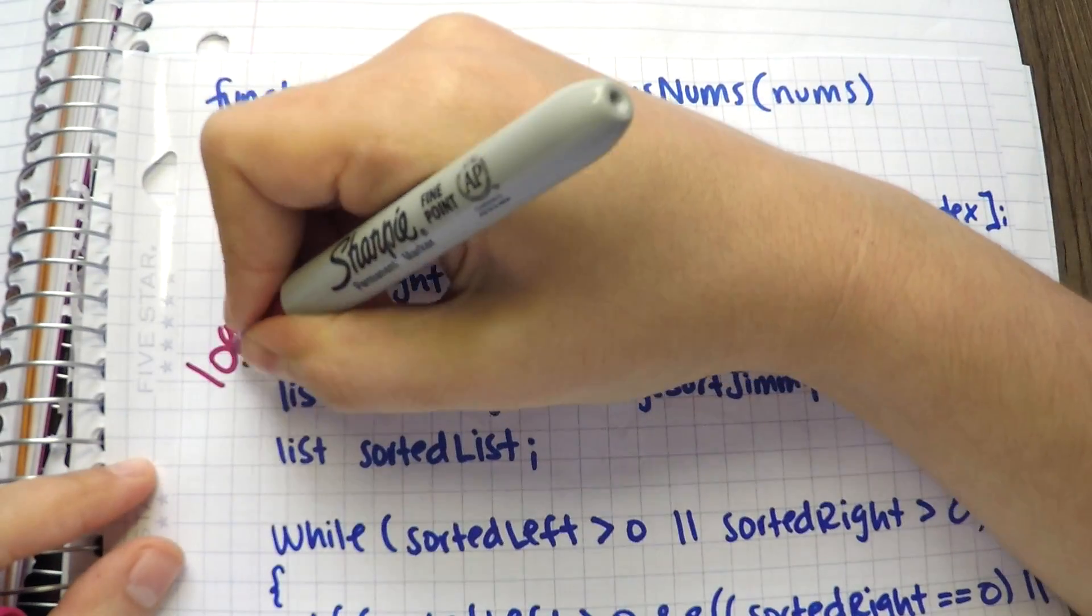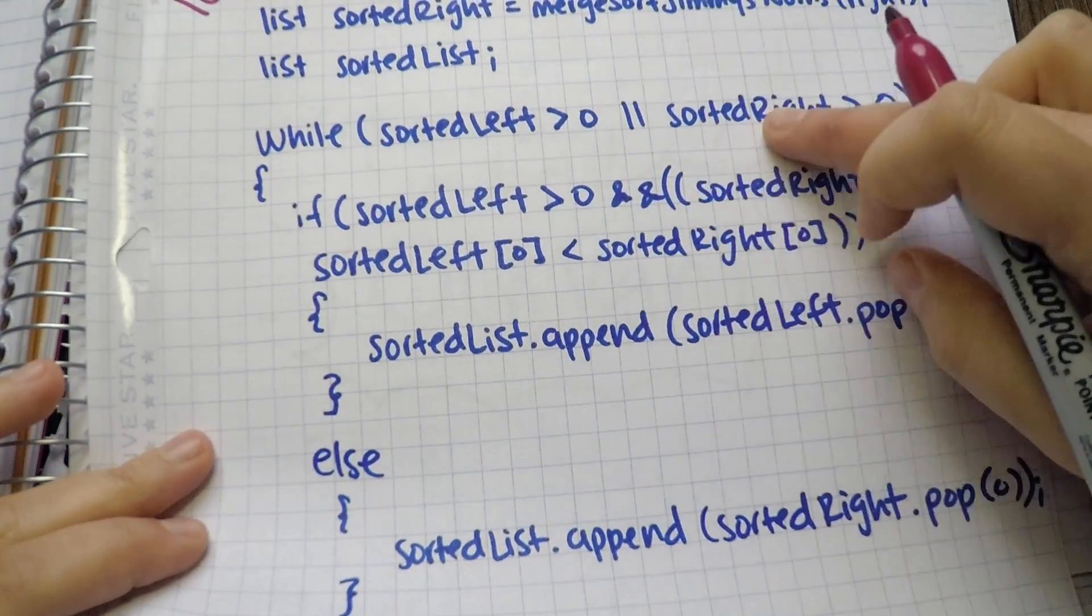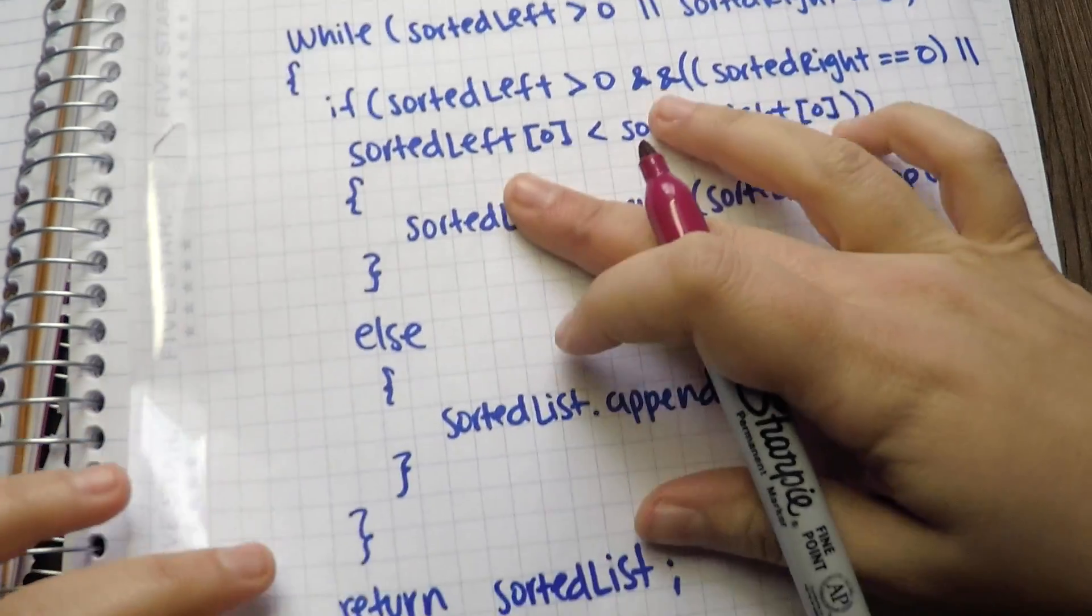The log n comes from halving the list into sub-lists of one, and the n comes from each time we merge two sorted sub-lists.